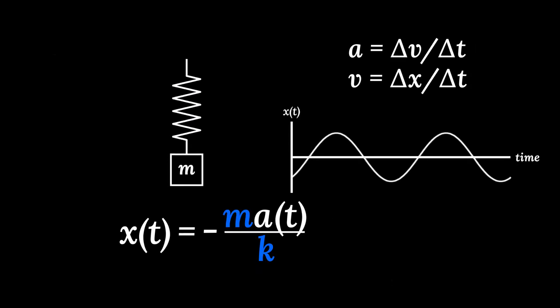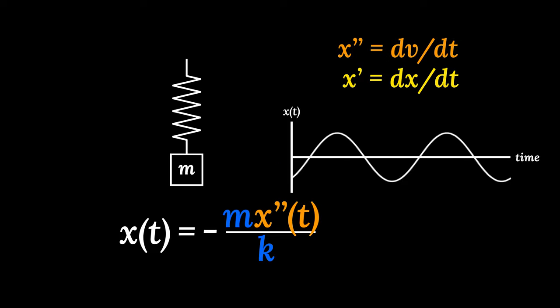I'll call the derivative of our function x prime. Velocity is change in position, so that's x prime. Acceleration is change in velocity, so that's x prime prime, or x double prime. So, x of t is negative m times x double prime over k. Now the challenge is to find a function where x is negative x double prime. Because k and m are constant, we can scale this mysterious function to get our answer. To uncover this mystery, we'll look at rotating objects.